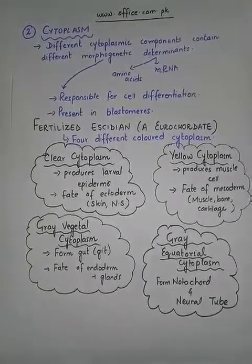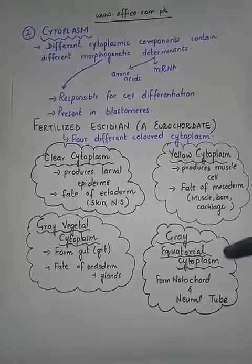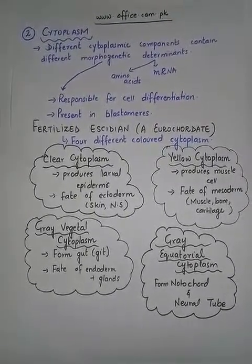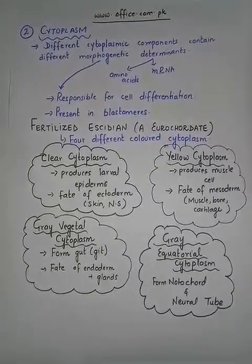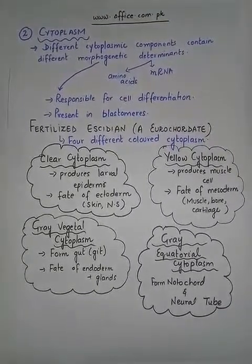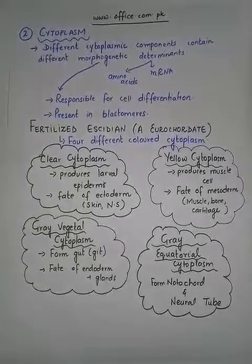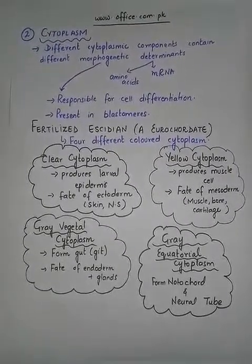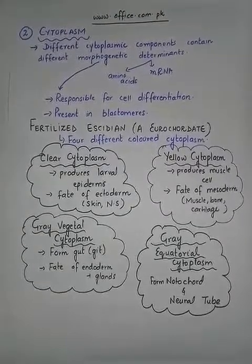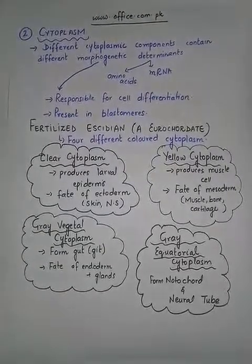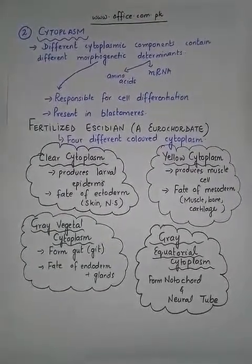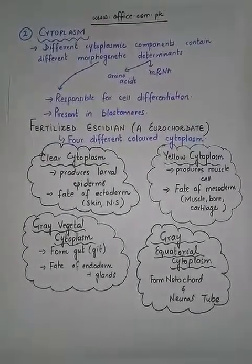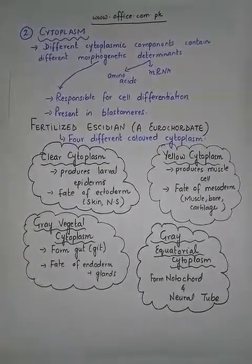The gray equatorial cytoplasm will form the notochord and neural tube. That is all about the role of cytoplasm in the growth, development, and differentiation of an embryo into a complete adult organism. Now let us move towards the next topic: the role of nucleus.